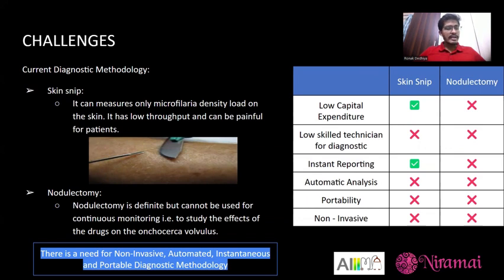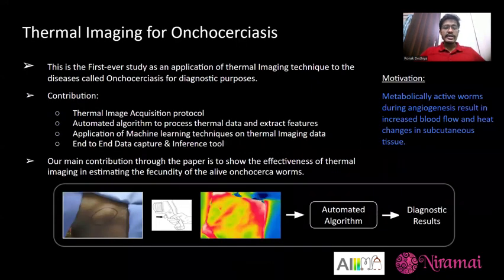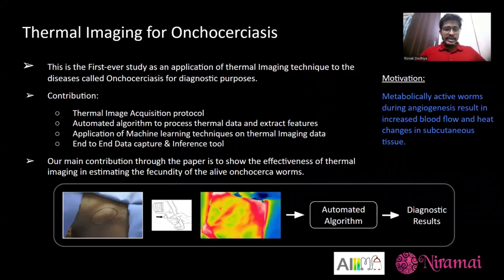We have proposed that thermal imaging can be used as a non-invasive technology to assess Onchocerca volvulus, and we have received funding from the Bill and Melinda Gates Foundation to conduct this research. This is the first ever study applying thermal imaging to Onchocerciasis for diagnostic purposes. The motivation is that the metabolically active worm undergoes angiogenesis, resulting in increased blood flow and heat changes in the subcutaneous tissue, which can be captured using thermal imaging cameras. We have proposed a thermal imaging acquisition protocol as one of our key contributions, and designed an automated algorithm to process thermal data and extract features.